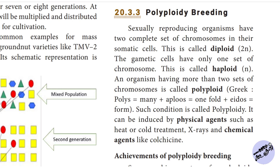Polyploidy can be introduced by physical agents such as heat or cold treatment, and chemical agents like colchicine.